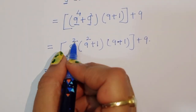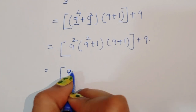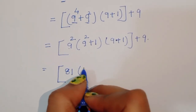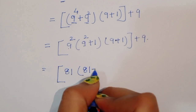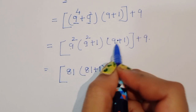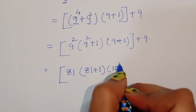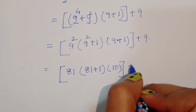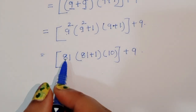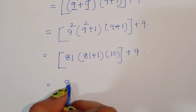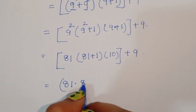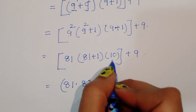9 power 2 means 81. So we can write 9 power 2 as 81, giving us 81 plus 1, which is 82. Times (9 plus 1), which is 10. So we have 81 times 82 times 10 plus 9.